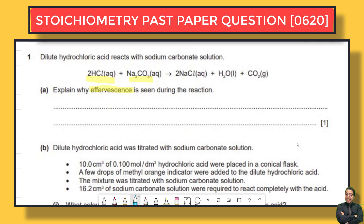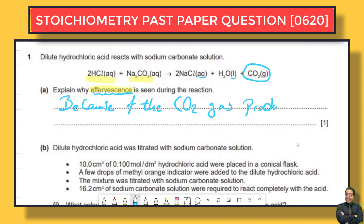Looking at the state symbol of each product: HCl is aqueous so it won't produce a gas. Water is liquid. But here we have carbon dioxide gas. We write: because of the production of carbon dioxide, CO₂ gas is produced, which causes the bubbles seen rising from the liquid.